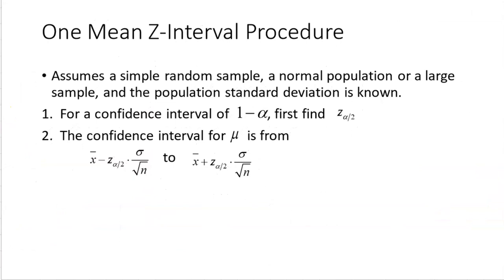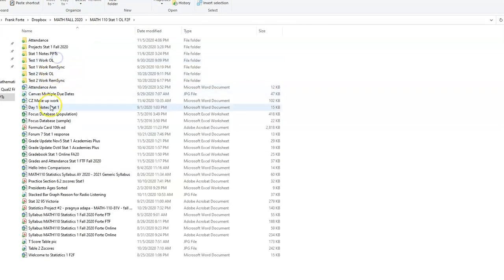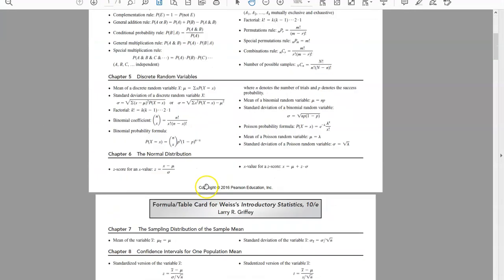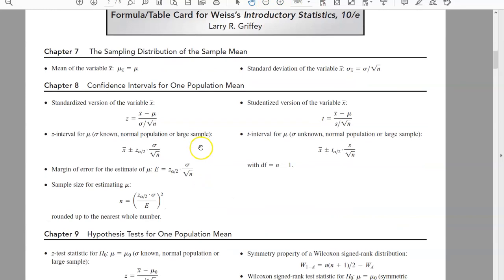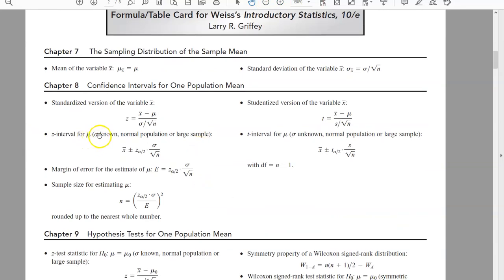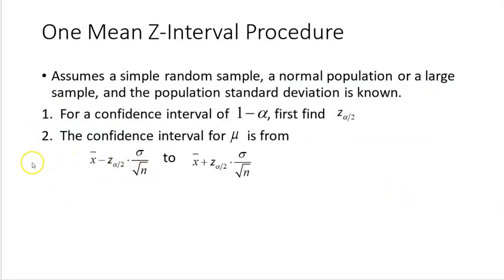This is the actual formula, which you'll also see on your formula card. It's the Z-interval for mu where the standard deviation is known: x-bar plus or minus Z-alpha-over-2 times the population standard deviation divided by the square root of the number of items in the sample. The confidence interval goes from below the mean to above the mean.